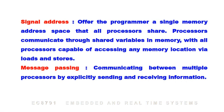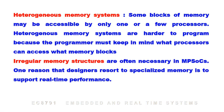Under message passing, processors communicate by explicitly sending and receiving information. In a heterogeneous memory system, some blocks of memory may be accessible by only one or a few processors. Heterogeneous memory systems are harder to program because the programmer must keep in mind what processor can access what memory blocks. Irregular memory structures are often necessary in MPSOCs, and one reason designers resort to specialized memory is to support real-time performance.